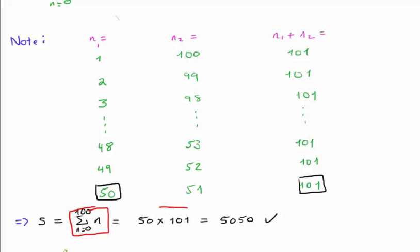This gives us 5050. So the sum of the first 100 integers is 5050.